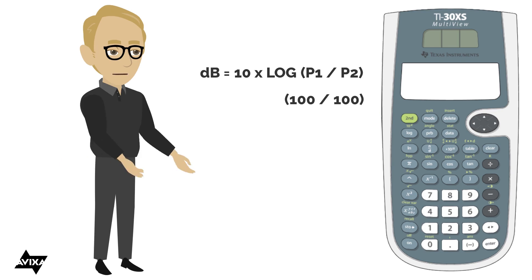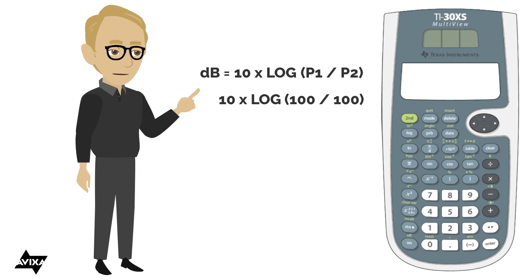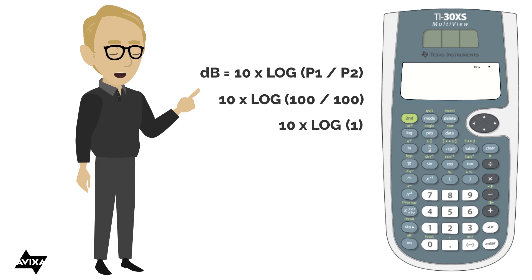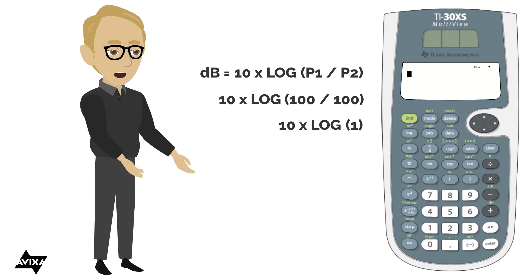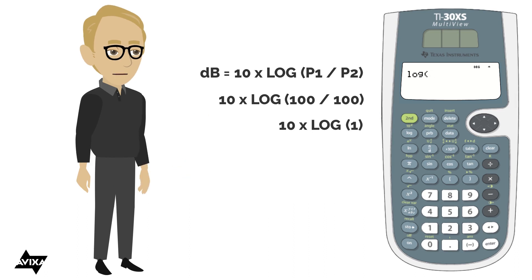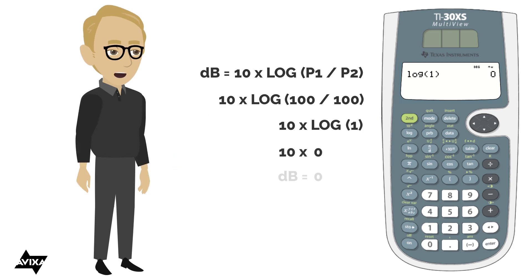So let's take 100 and compare it against 100. We're going to take the logarithmic relationship of that and multiply it times ten. I don't even need the calculator for 100 divided by 100 — that's simply one. Ten times the log of one: using the log function, log(1) equals zero, and ten times zero is zero.